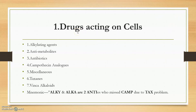So the drugs acting on cells — cytotoxic drugs — we have a mnemonic: 'Alki and Alka are two aunties who missed the camp due to tax problem.' Alka stands for Vinca alkaloids, Alki stands for alkylating agents, two aunties stands for anti-metabolites and antibiotics, Camp stands for camptothecin analogs, and Tax stands for taxanes. So the classification is ready.